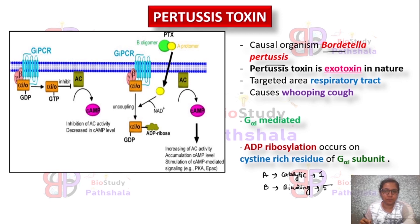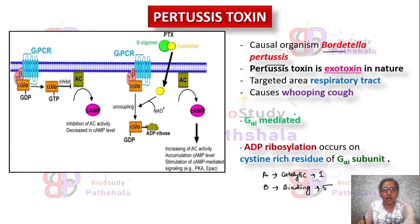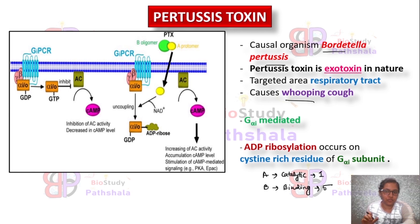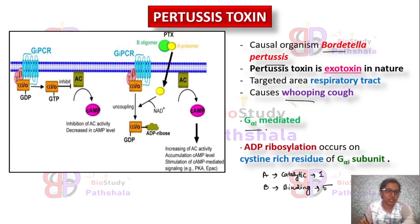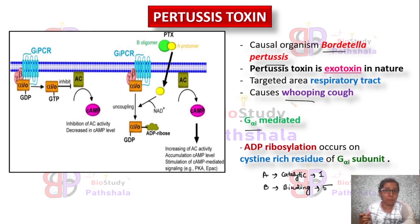The number of A subunits is only one while the number of B subunits is five. This toxin mainly affects the respiratory tract of the human body and causes whooping cough disease. This toxin follows the GPCR-mediated pathway, that is the G protein coupled receptor mediated pathway, mainly the Gi alpha subunit mediated — the inhibitory subunit of G alpha.